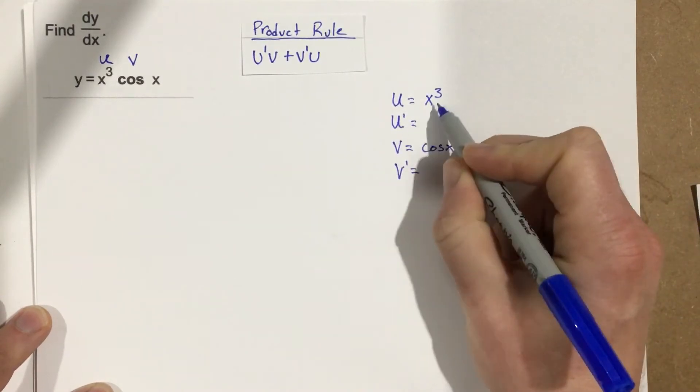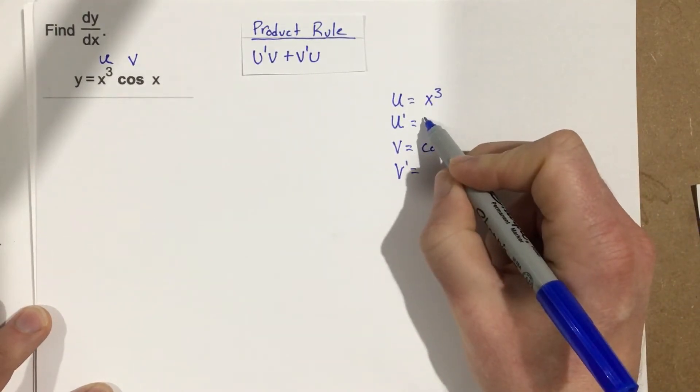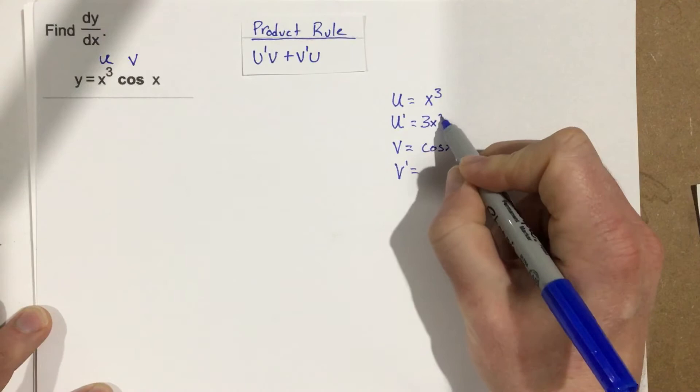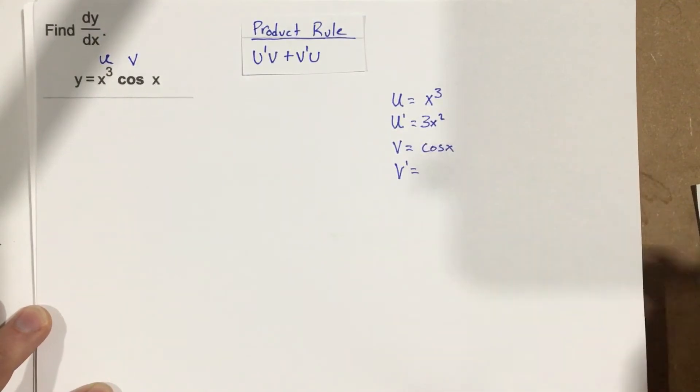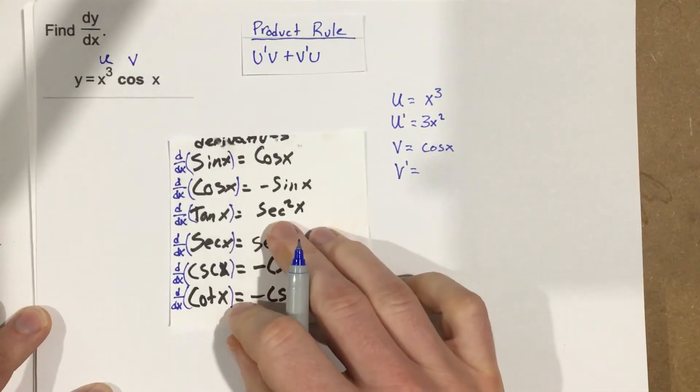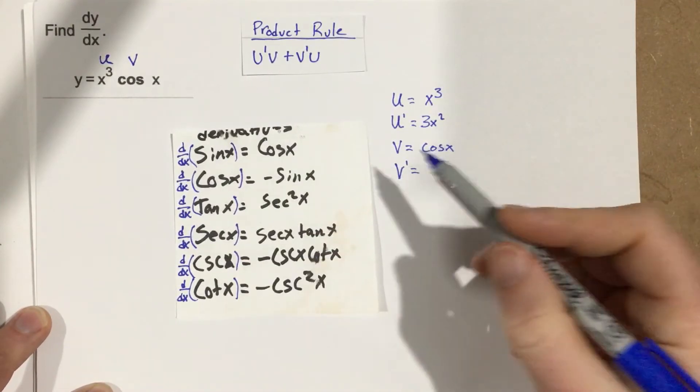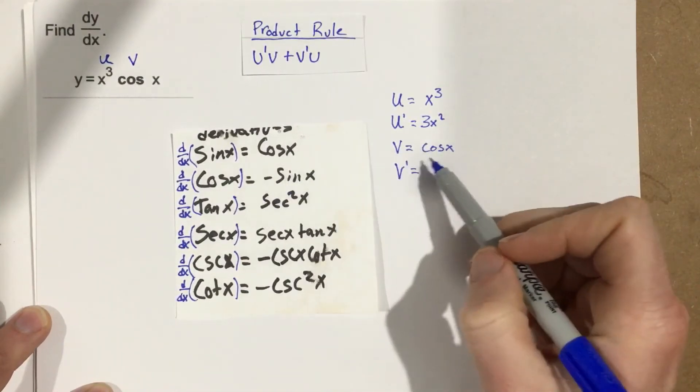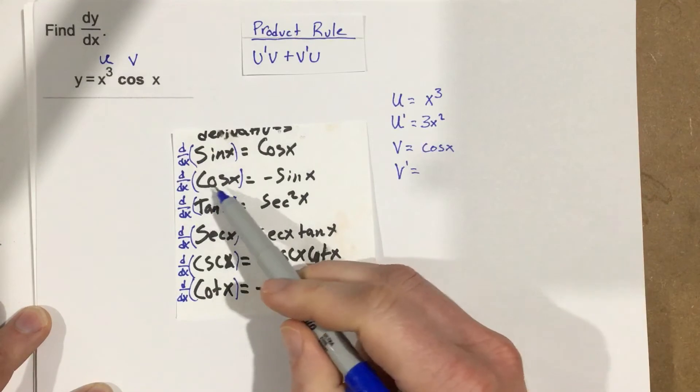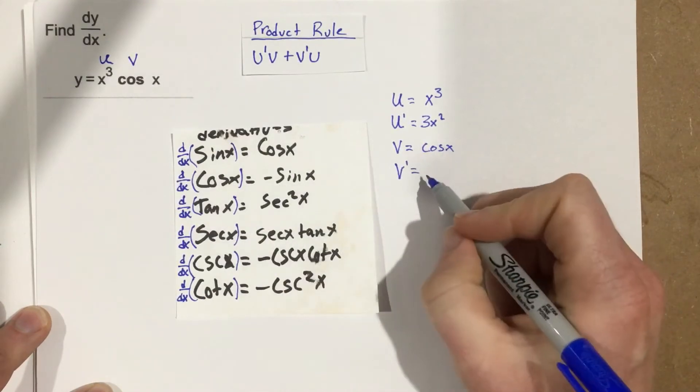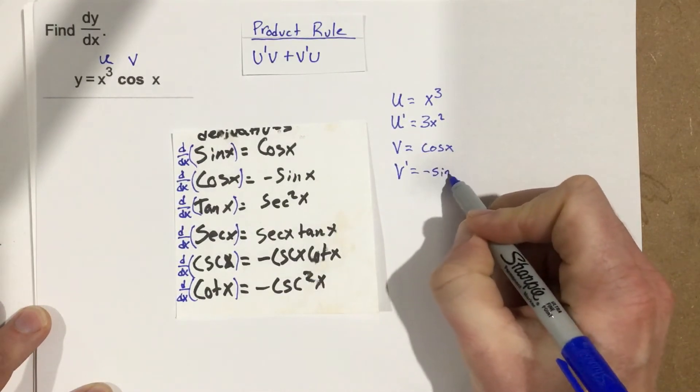Well, I know that u prime would be the derivative of x cubed which is 3x squared, bringing the power to the front. And the derivative of v, I can bring out my trigonometric derivatives. I'm taking the derivative of cosine, so the derivative of cosine is negative sine. So this is negative sine x.